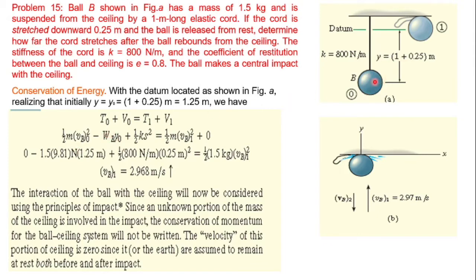The potential energy due to weight is negative (below datum) — weight times 1.25 meters. The elastic potential energy stored in the cord is half K s squared, where s equals 0.25 meters. So the elastic energy at position zero is half K (0.25)².